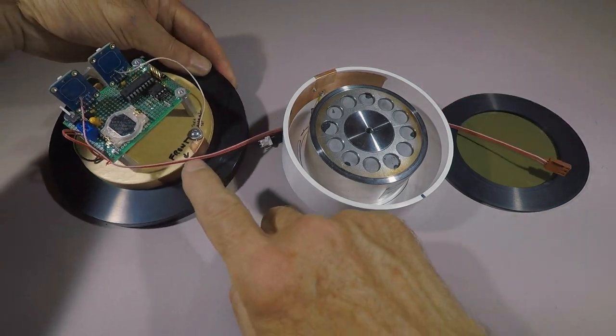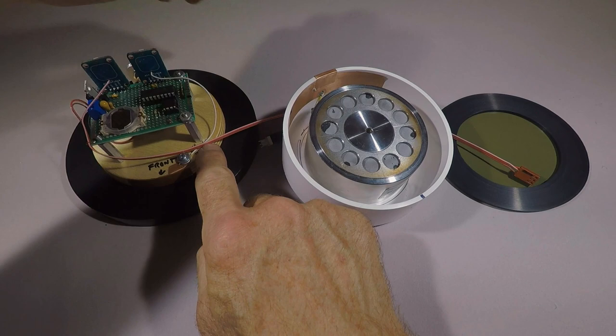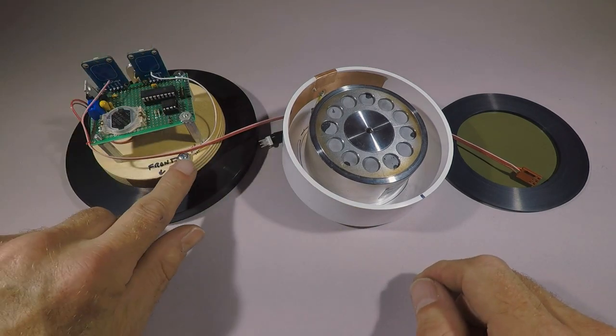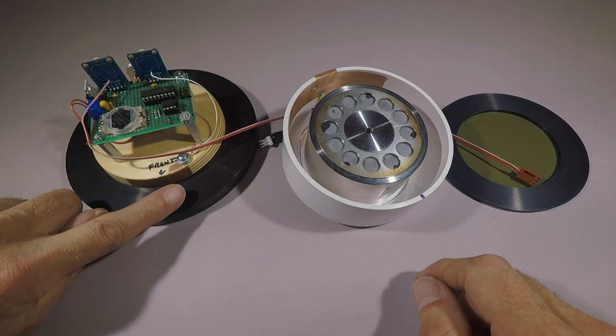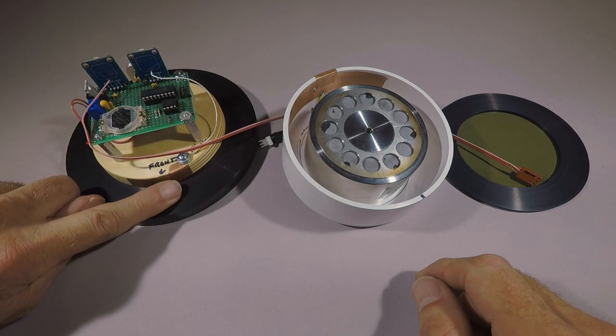And notice I've labeled it front here because this other touch switch is connected to this piece of copper here and when the plumbing pipe fits over it then you can put your finger right here and do the time set feature.